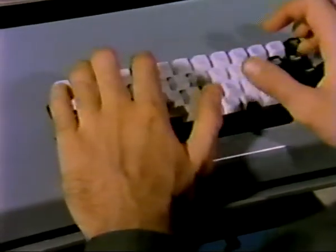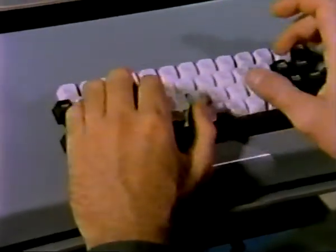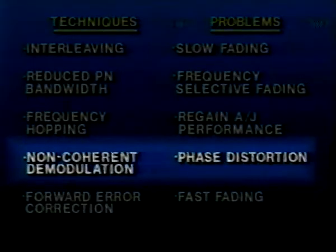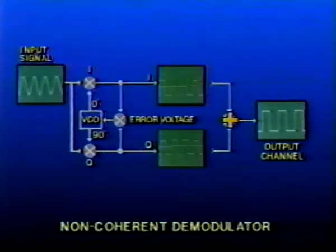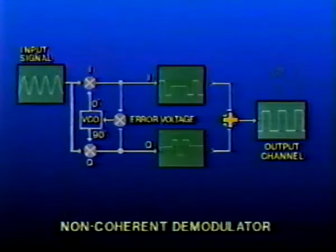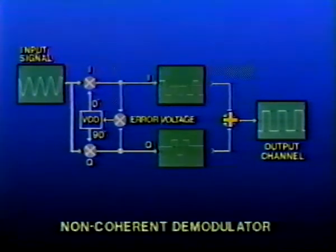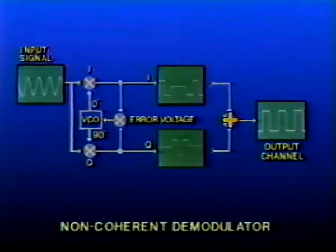The pseudo-random hopping patterns are derived from the address codes. Therefore, not only is the code itself unique to a given address, but so is the pseudo-random hopping pattern. Non-coherent demodulators do not require the receiver to phase lock to the incoming signal. When the USC-28 is operating in the mitigated mode, the Costas Loop receiver is converted into a non-coherent demodulator through software by summing the I and Q channel outputs. This results in a valid output signal regardless of which channel the signal may be coming through at any given moment.